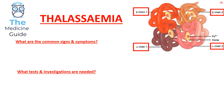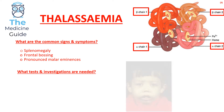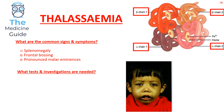The common signs and symptoms in either beta or alpha thalassemia include splenomegaly. Two key features very common in thalassemia are frontal bossing and pronounced malar eminences, which you can appreciate from the picture shown.